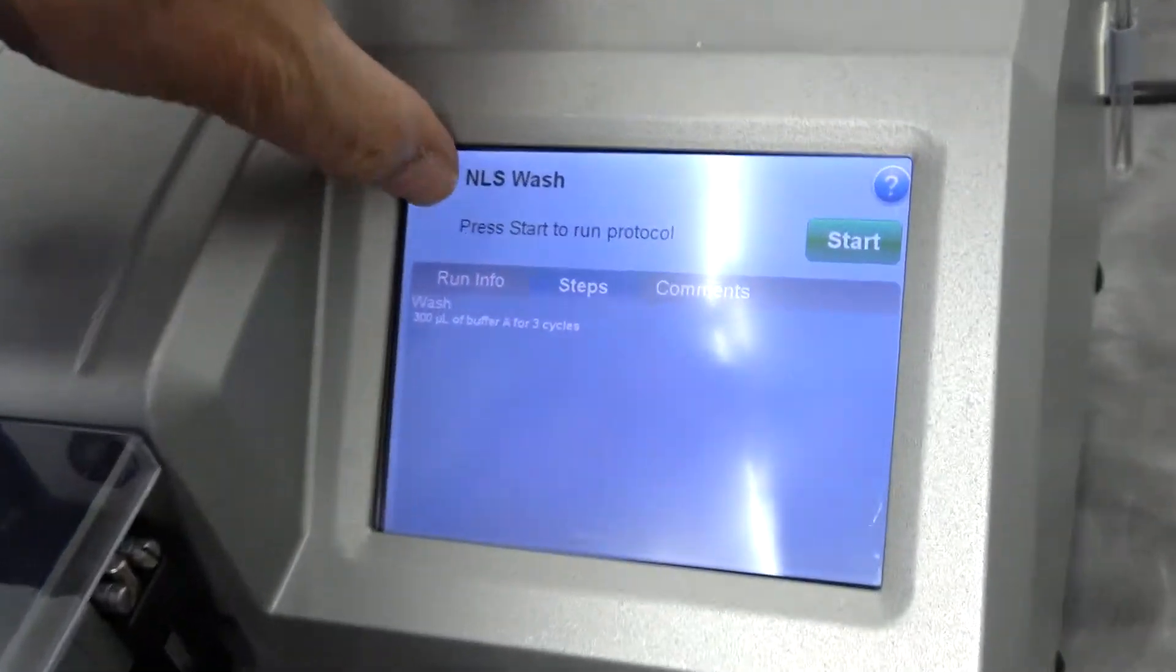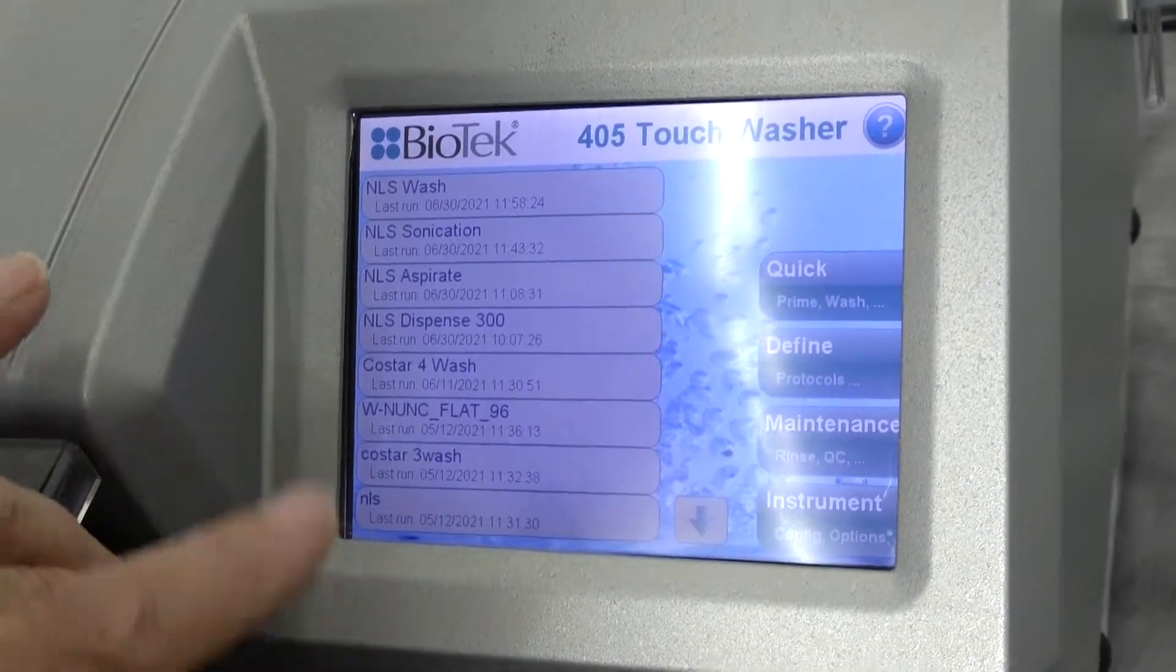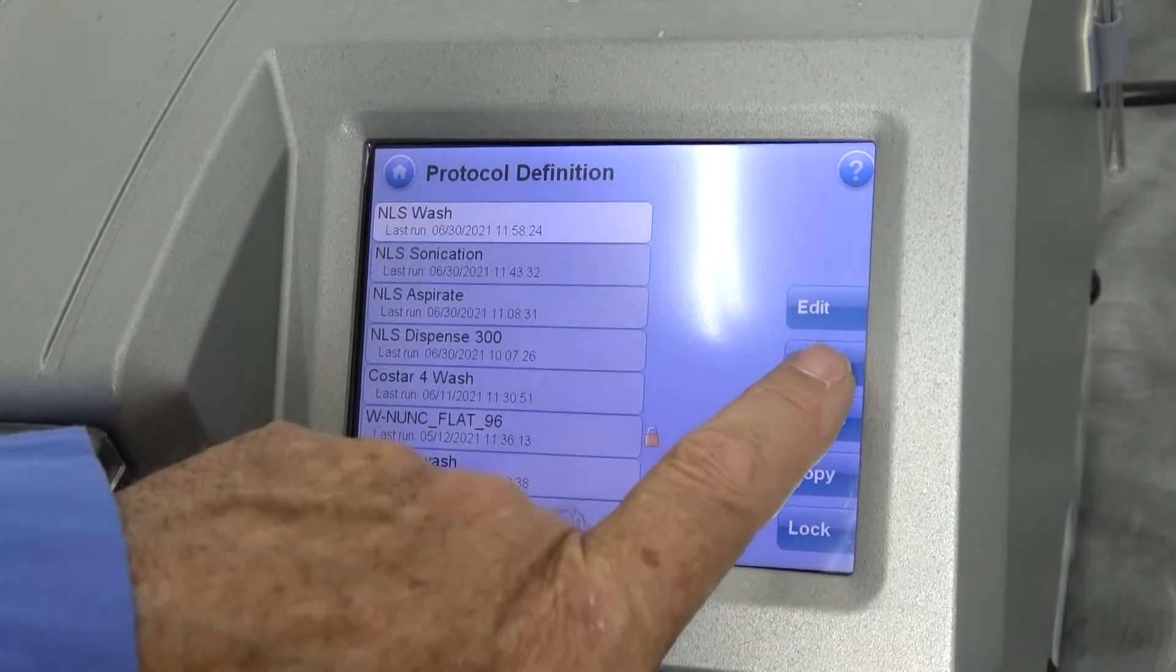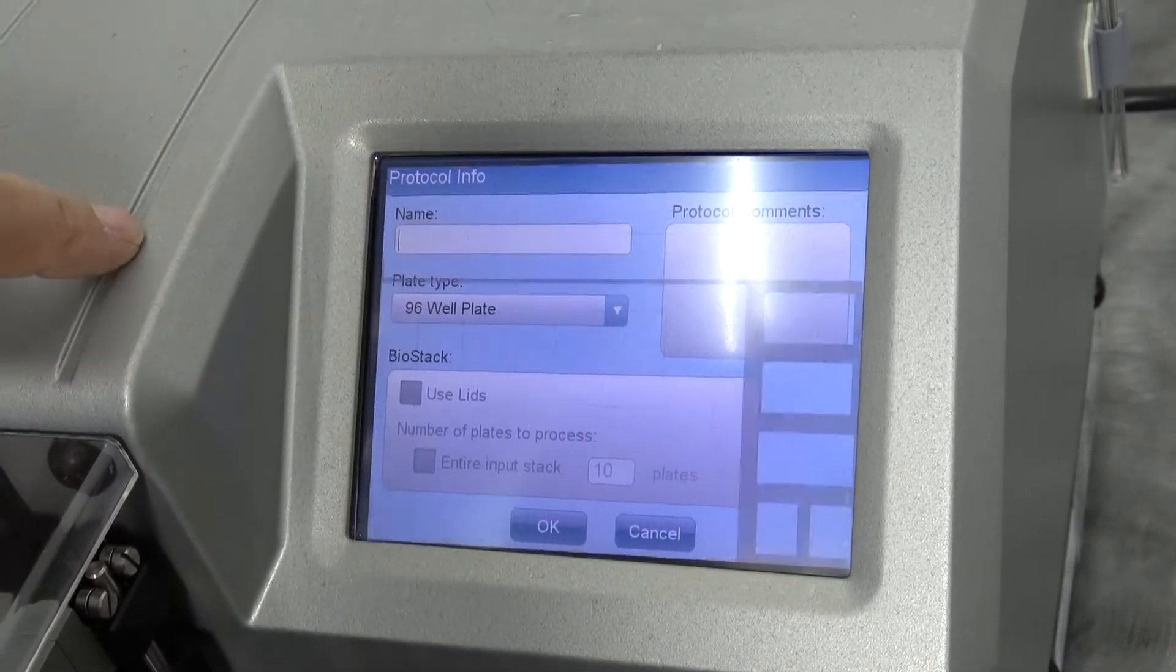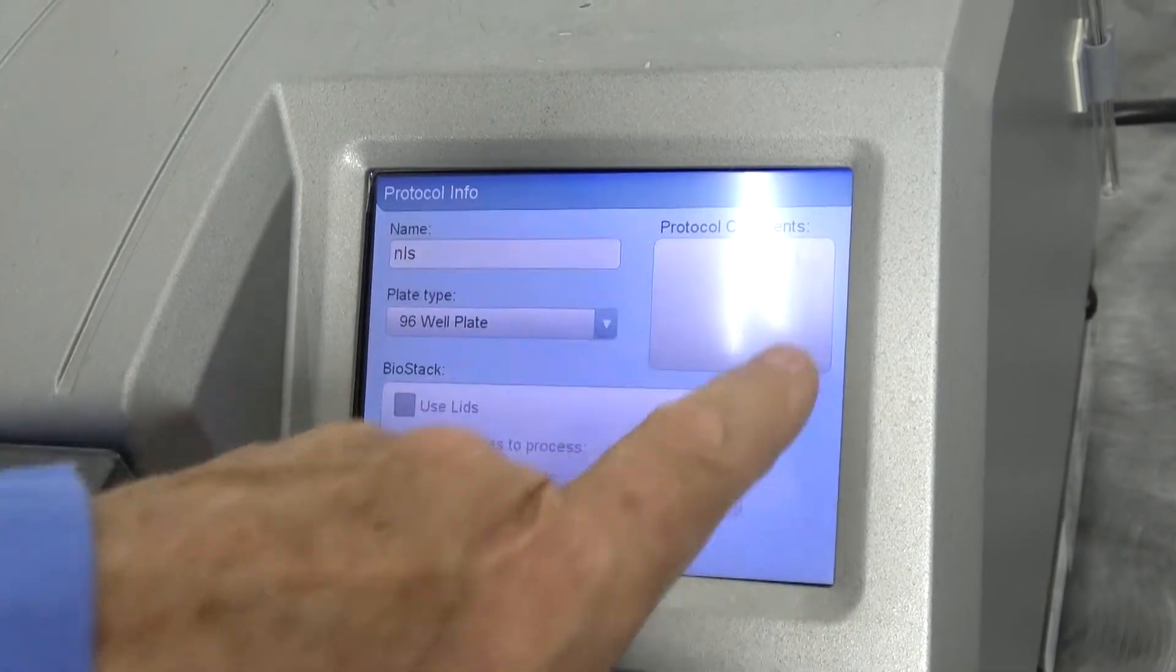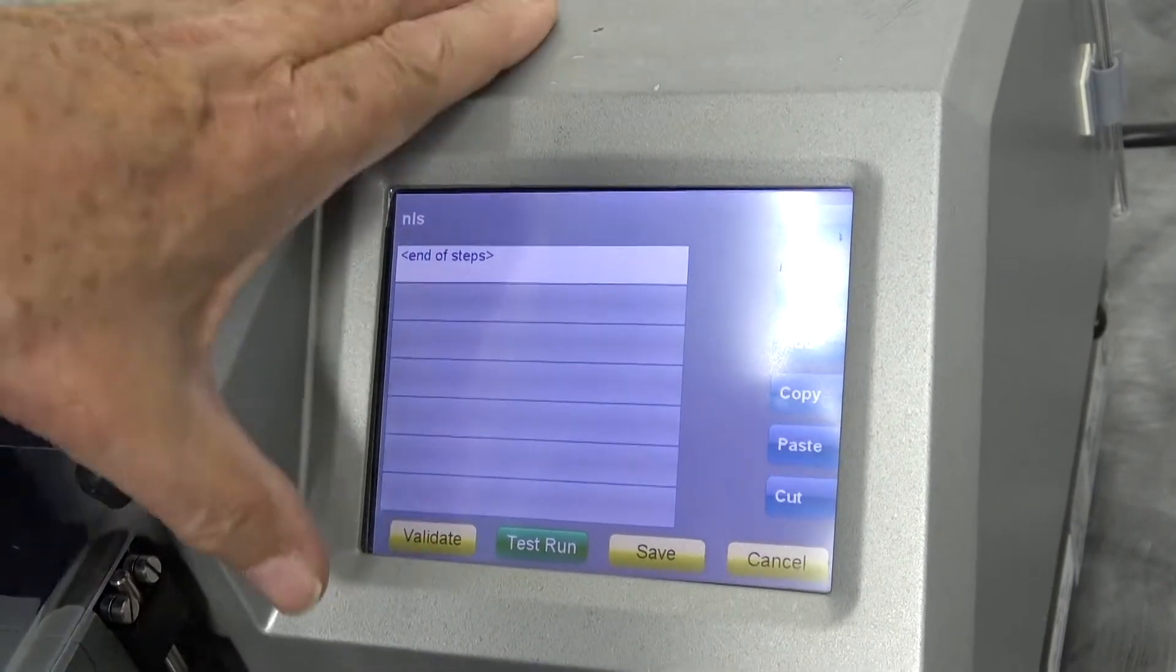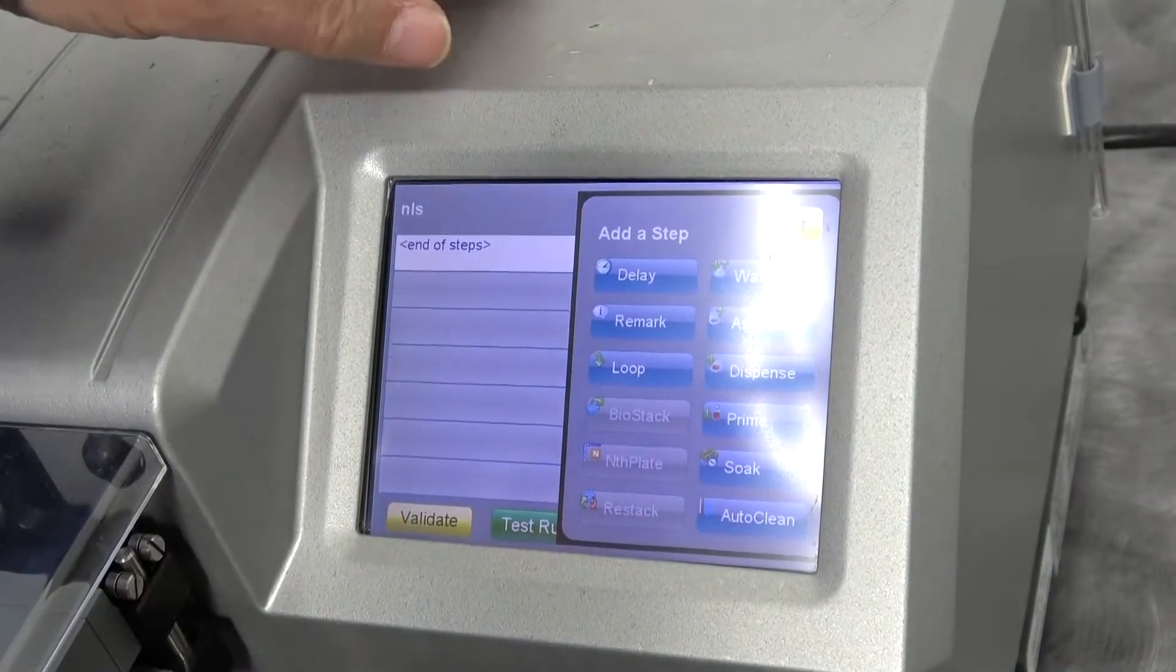We're going to take this back to the home screen. It's a touchscreen, so we all know how to run it. If we want to create a new protocol, we're going to define. We're going to create. We'll give it a name. Touchscreen comes right up. Let's just give it NLS. We can give it a very in-depth name. You can give it instructions. Here's where we're starting our list of programs. We tell it we want to add a step into it.